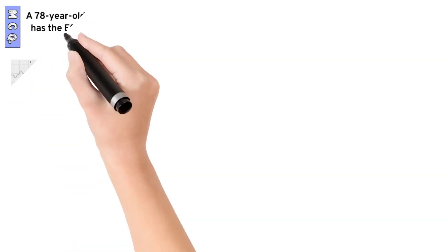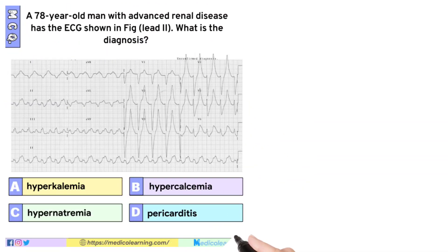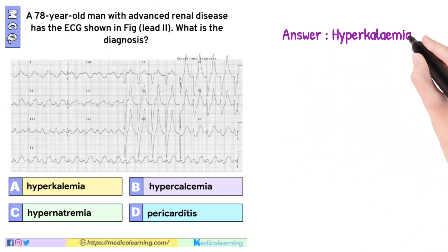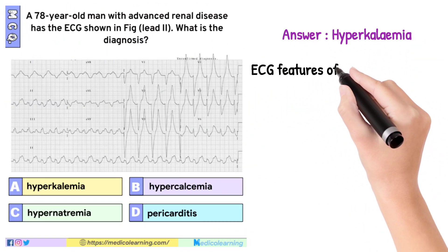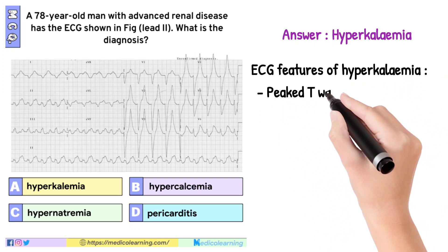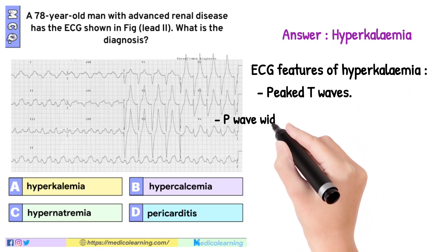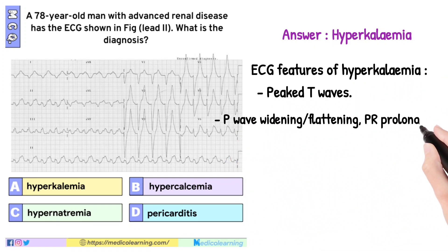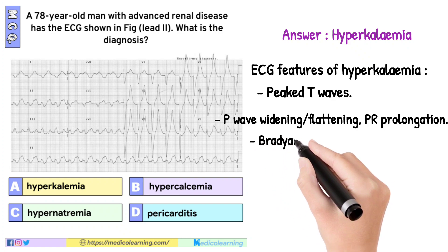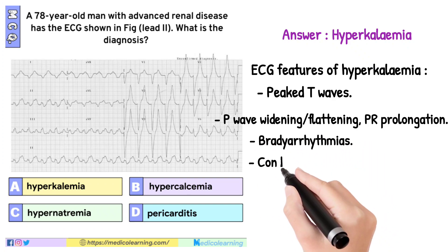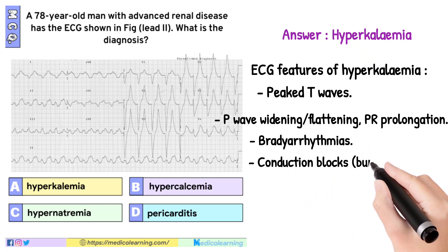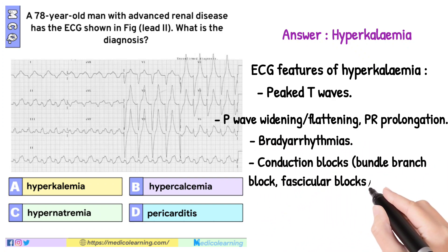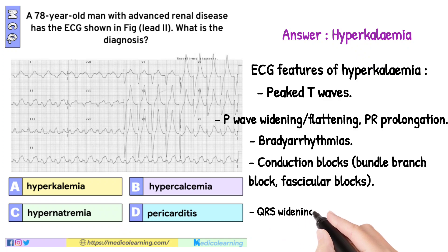In this question, the answer is Hyperkalemia. ECG features of hyperkalemia include peaked T waves, P wave widening and flattening, PR prolongation, bradyarrhythmias, conduction blocks, bundle branch block, fascicular blocks, and QRS widening with bizarre QRS morphology.